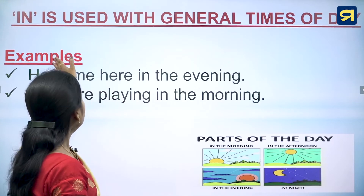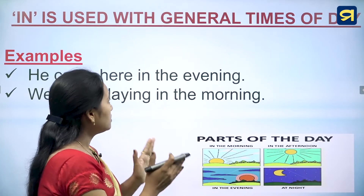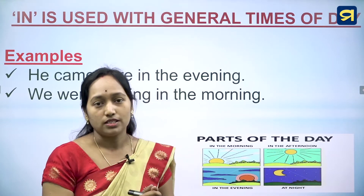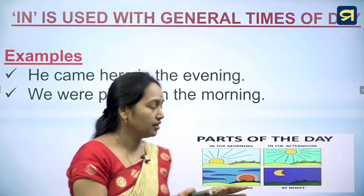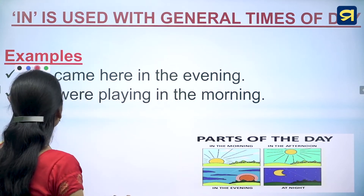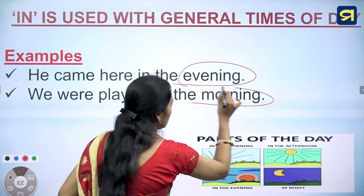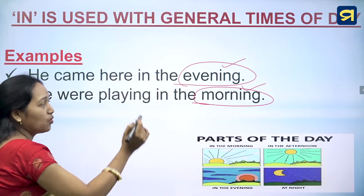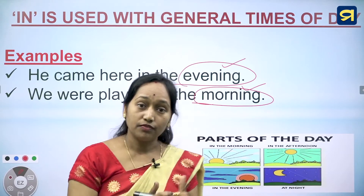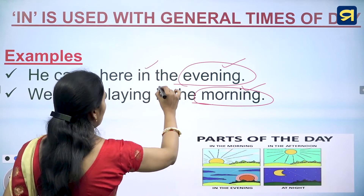'In' is used with general times of day — the parts of the day such as morning, evening, afternoon. For example: he came here in the evening, and we were playing in the morning. Remember: for night, we use 'at', but for evening and morning we use 'in'.